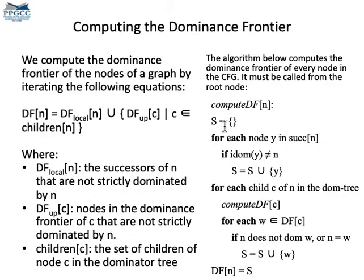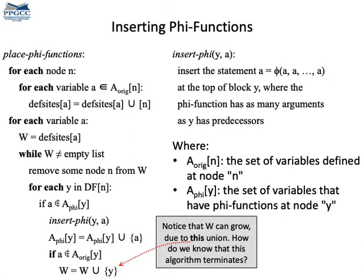Once we have computed the dominance frontier of the nodes in the CFG, we can insert phi functions. The algorithm on the left side of the slide inserts phi functions: for each definition of a variable a in a basic block n, it inserts phi functions for a at every node in the iterated dominance frontier of n — that is, the dominance frontier of n, the dominance frontier of the dominance frontier, and so on.